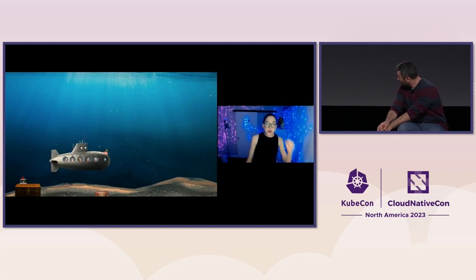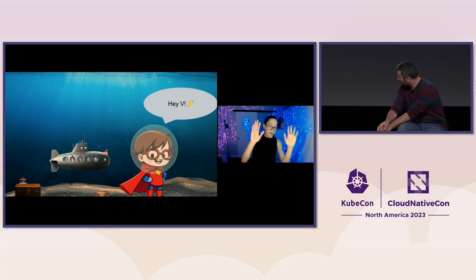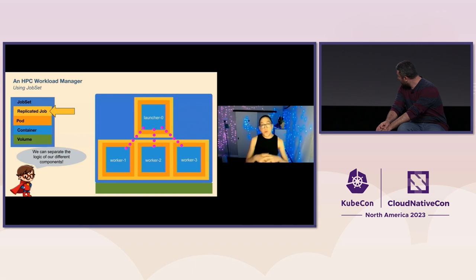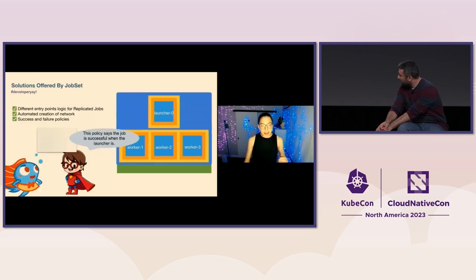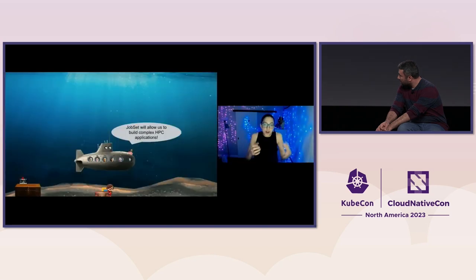We kept going and we encountered JobSet. With JobSet, we could add this other abstraction. By having more than one replicated job, we could separate the logic of our different components — specifically into a lead broker and follower brokers. We could still have them on the same network. And with a success policy, we could say: when the lead broker is done, the entire job is done. We knew that JobSet would be this abstraction to allow us to build these complex HPC applications.